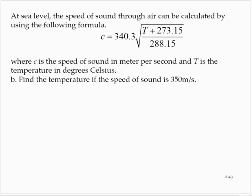Part B: Find the temperature if the speed of sound is 350 meters per second. So if the speed of sound is 350, we substitute that for the C variable: 350 is equal to 340.3 times the square root of (T plus 273.15) over 288.15.